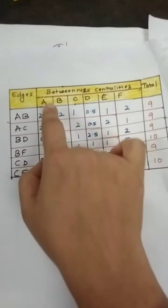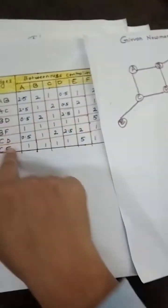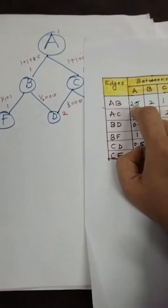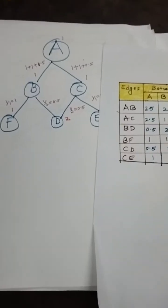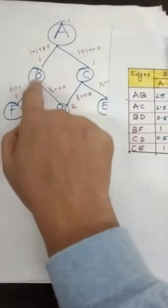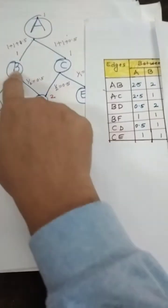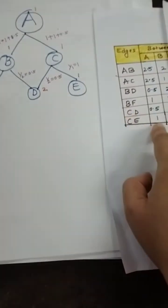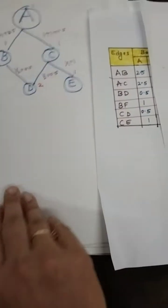Now make a table listing all edges: AB, AC, BD, BF, CE, CD. Also write down the nodes A, B, C, D, E. From node A: edge AB has weight 2.5, so write 2.5. Edge AC is also 2.5. Edge BF you got 1. Edge BD you got 0.5. Edge CD is 0.5. Edge CE is 1. Node A calculations are complete.